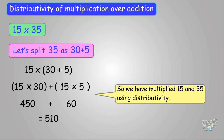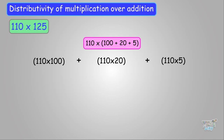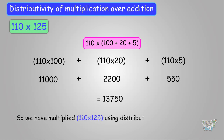Here we have another example. We have to multiply 110 by 125. So we split 125 as 100 plus 20 plus 5 for our convenience. So we multiply 110 with (100 plus 20 plus 5), and using the distributive property we write it as 110 times 100 plus 110 times 20 plus 110 times 5. Multiplying 110 with 100 we get 11,000. Multiplying 110 with 20 we get 2,200. Multiplying 110 with 5 we get 550. Adding these we get 13,750. So we multiplied 110 with 125 using the property.